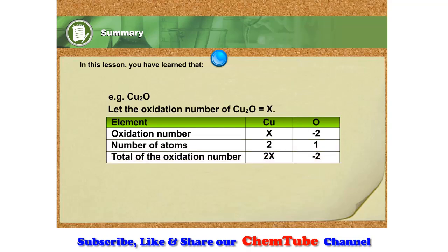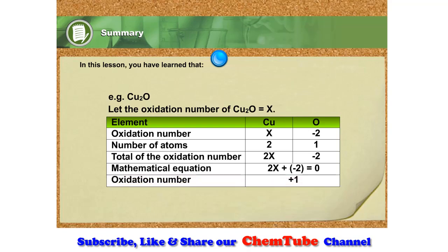Step two: multiply each oxidation number by the subscript of the element in the chemical formula. Step three: write the mathematical equation for the sum of oxidation numbers. Step four: solve the mathematical equation to determine the unknown oxidation number.